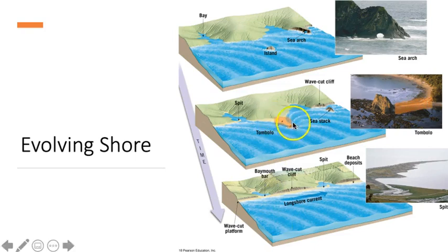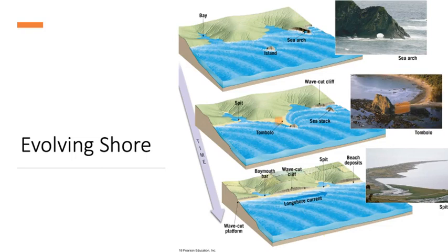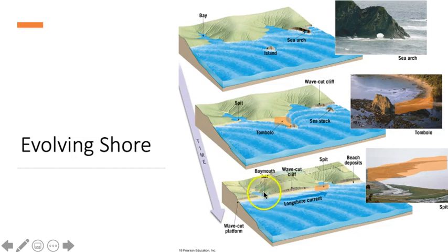Tombolos are deposits of sand that connect the mainland to sea stacks. In this photograph, that's the sea stack, that's the mainland, and there's the tombolo. Spits are deposits of sand that extend from land out into the sea to create a peninsula. A baymouth bar is quite similar, but different in that they cut off a bay from the ocean.